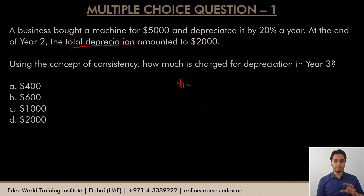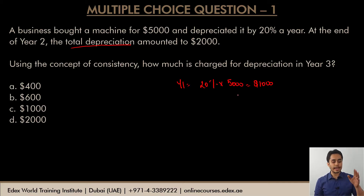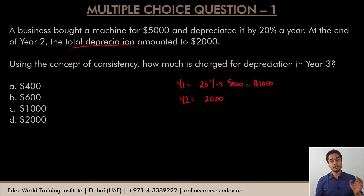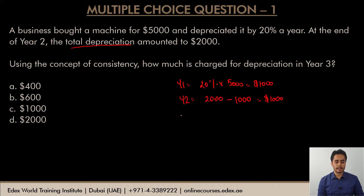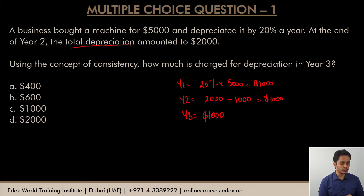If I calculate the year one depreciation, which is 20% of $5,000, we get $1,000. As per the question, the total depreciation at the end of year two was $2,000. So the annual depreciation for year two would be total depreciation till year two minus the year one depreciation — so $1,000. Since depreciation is $1,000 in year one and $1,000 in year two, it is obvious that the business is following the straight line method at 20% rate. The third year's depreciation will also be $1,000, so the correct option is option C.